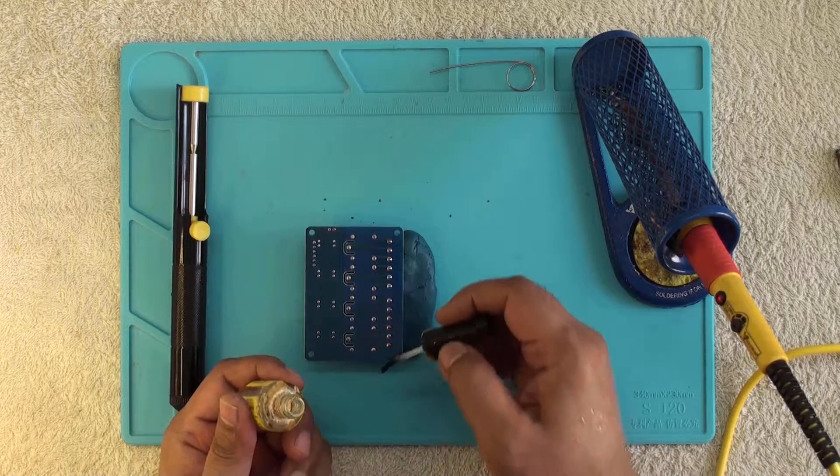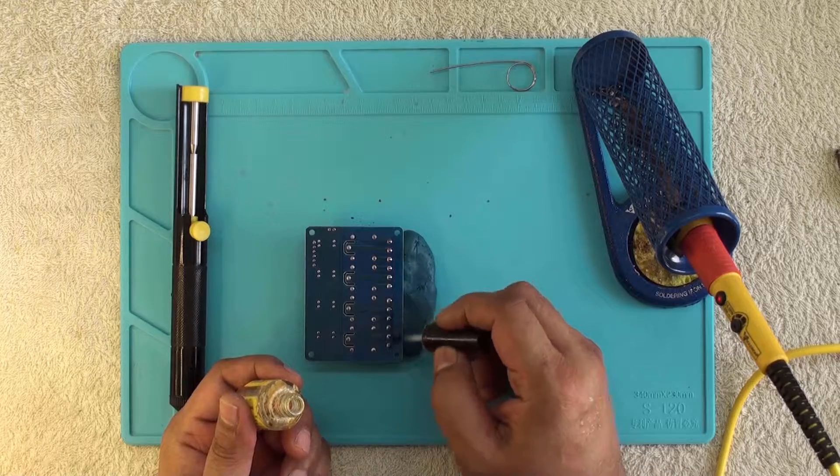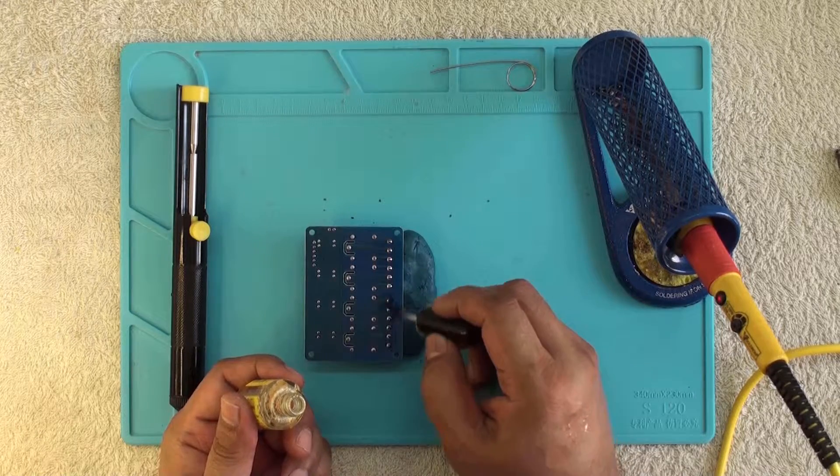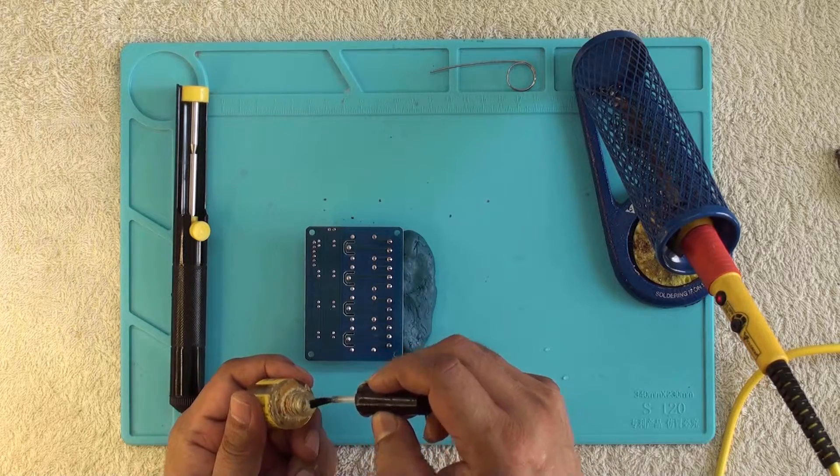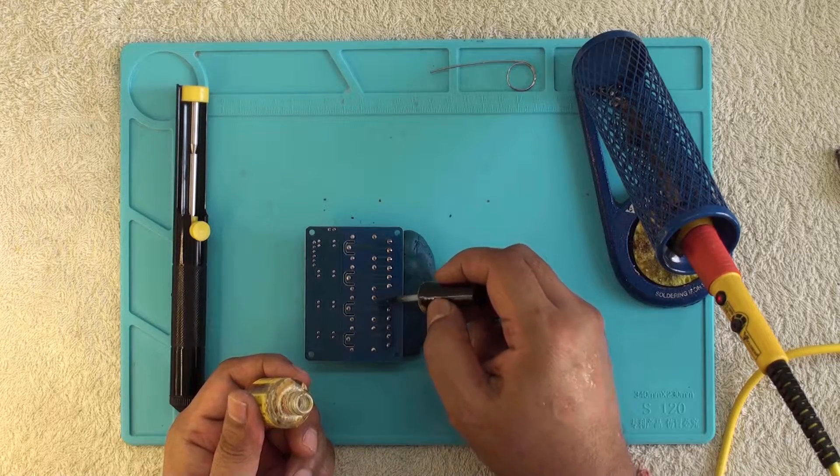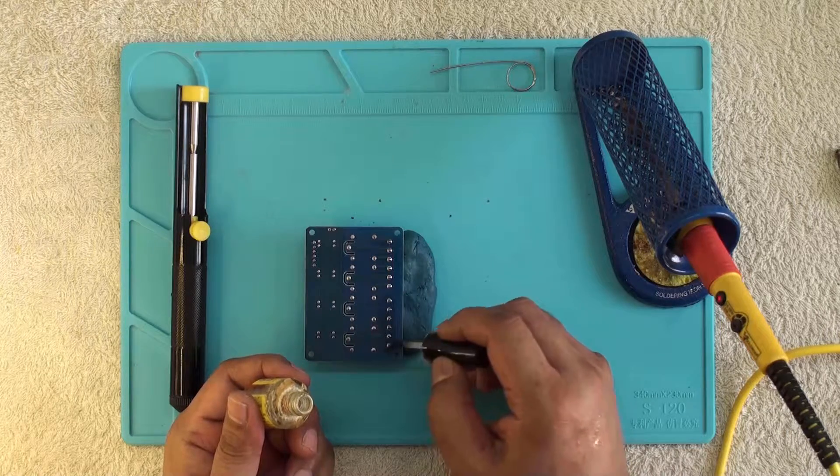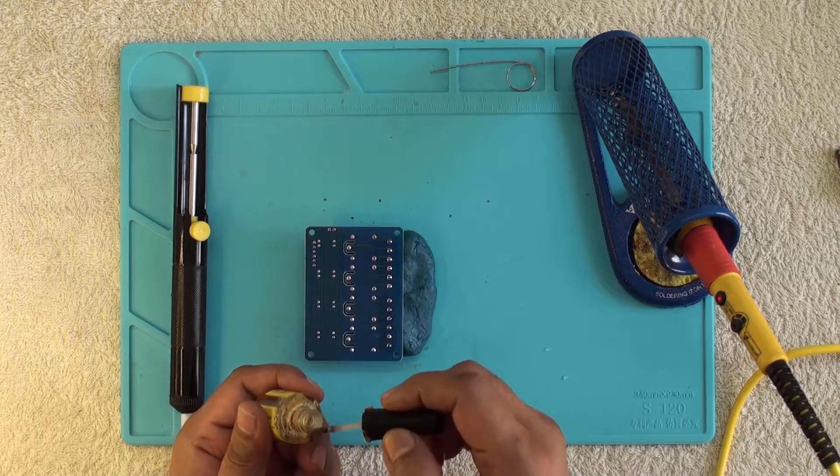In the meantime, let's apply flux on these pins. We should apply sufficient flux so that solder melts easily and properly. We are using blue silicon mat to protect our table during soldering. We have purchased this soldering mat online from Banggood.